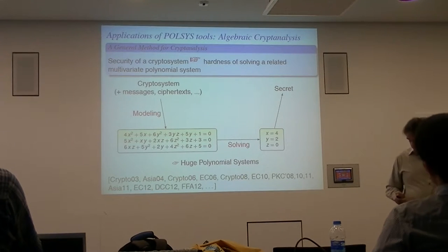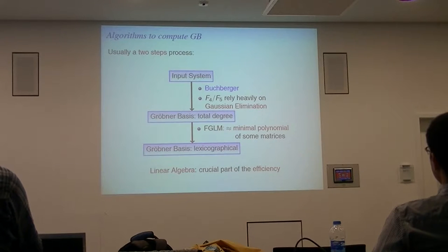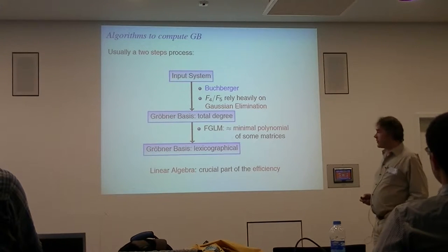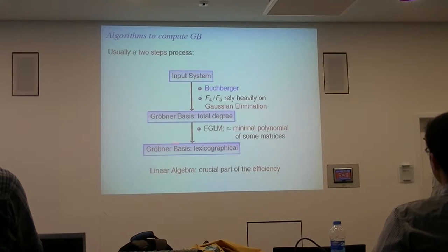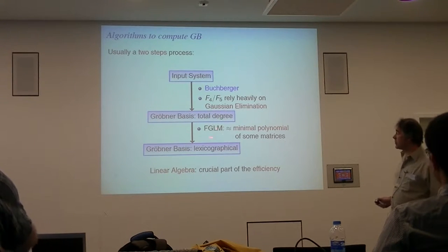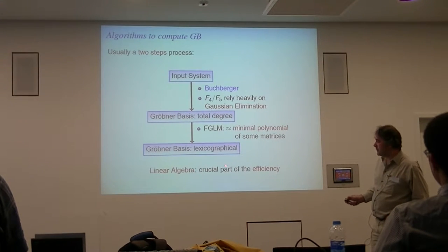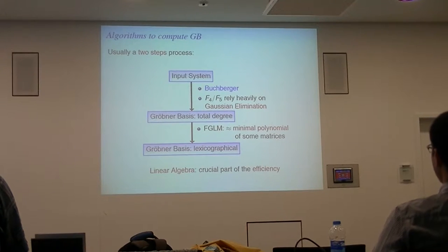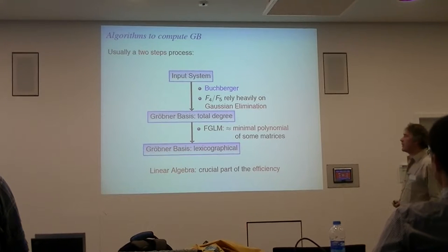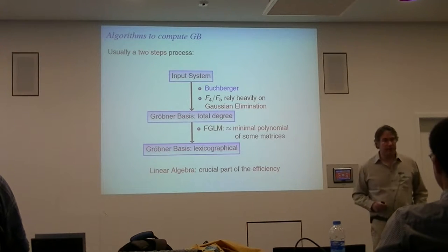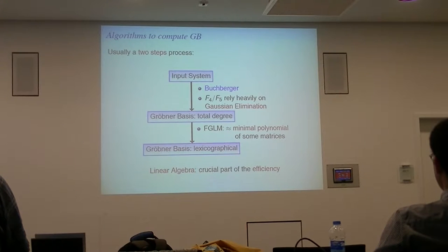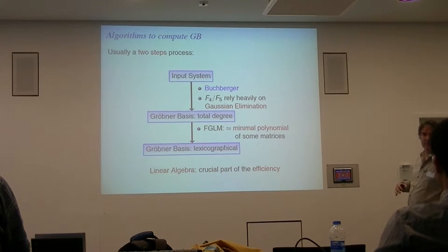This is for the introduction. Now we want to see how to use linear algebra to compute the Gröbner basis. It is a two-step process. The first step is to start from the input system and compute the Gröbner basis for total degree ordering. The second step is to change the ordering to obtain the univariate polynomials. To do that, we can use the original algorithm, but we can also use algorithms relying on linear algebra — performing Gaussian elimination on sparse matrices and computing minimal polynomials associated to some matrices.